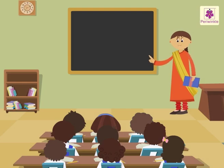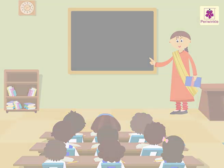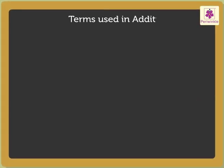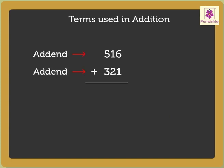Today, let us revise addition and see how to add large numbers. We already know that the numbers we add are called addends, and the answer we get after adding the numbers is called sum.